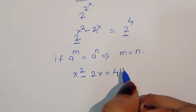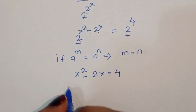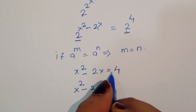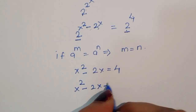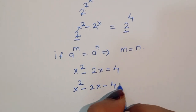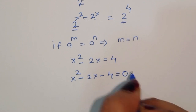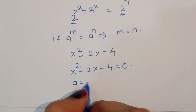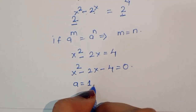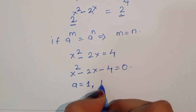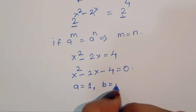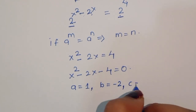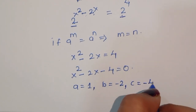Now x squared minus 2x minus 4 is equal to 0. Here the coefficient a is equal to 1, b is equal to minus 2, and c is equal to minus 4.